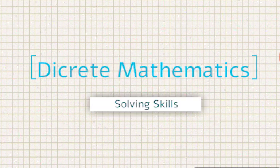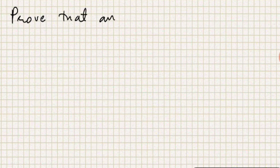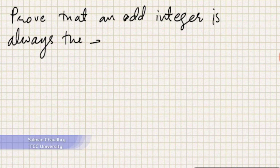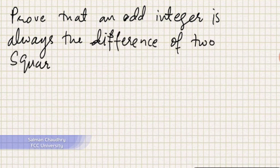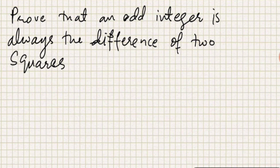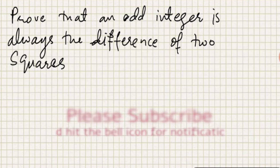I'll be doing another example from direct proofs. The statement is: prove that an odd integer is always the difference of two squares. This can be a difficult thing to begin because you don't know the integers whose square this odd number could be.